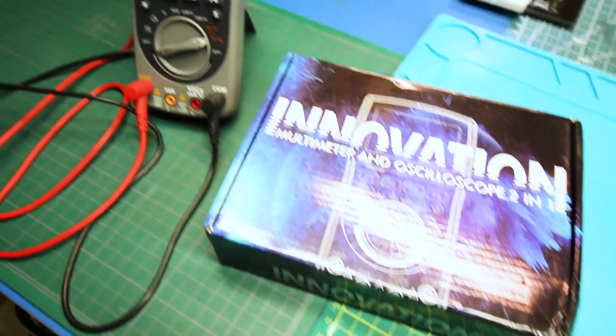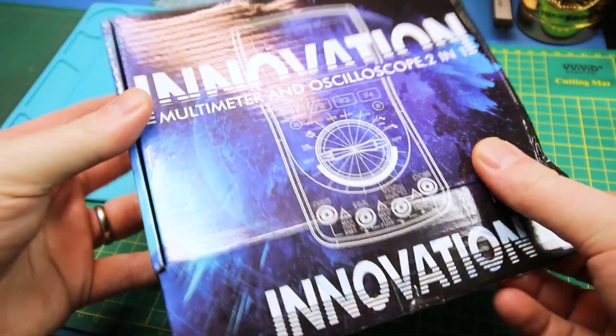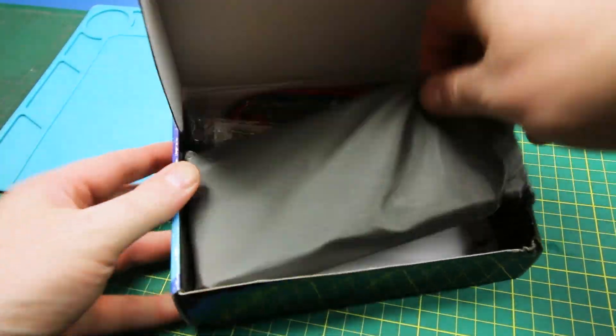Today we'll take a first look at the MDS 8207 Scope Meter. Okay, we're gonna quickly take a look at this today.